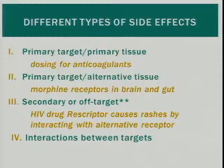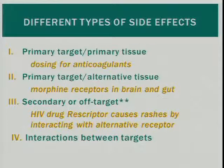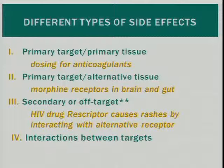The third class, which is the focus of this talk, is secondary or off-targeting — when the drug interacts with receptors that are not the primary receptor. A quick example is the HIV drug efavirenz, which also causes rashes because it interacts with an alternative receptor. You can also have side effects due to interactions between these different types of targets, but today we're going to focus on the third category.